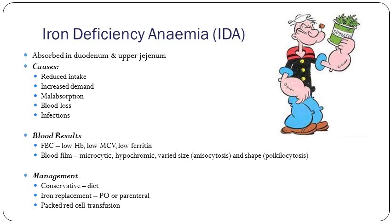Causes of iron deficiency anemia include reduced intake — common in elderly patients with inadequate diet, malnourished children — increased demand in childhood growth spurts and pregnancy, malabsorption such as celiac disease and inflammatory bowel disease, blood loss through GI malignancies and menorrhagia, and chronic infections. On a blood test you'd see low hemoglobin, low MCV, and low ferritin. On a blood film: small, pale-looking cells, varied size and shape. Management depends on the level of anemia — dietary changes, oral iron tablets, parenteral iron infusion, or red cell transfusion if severe.